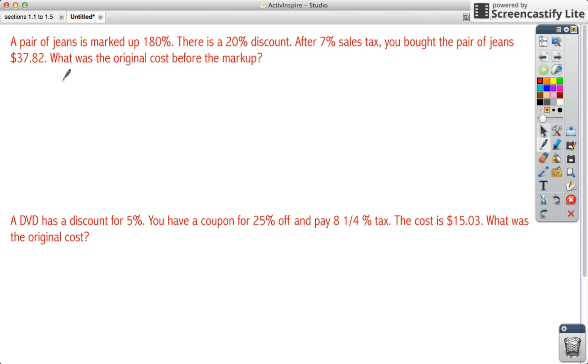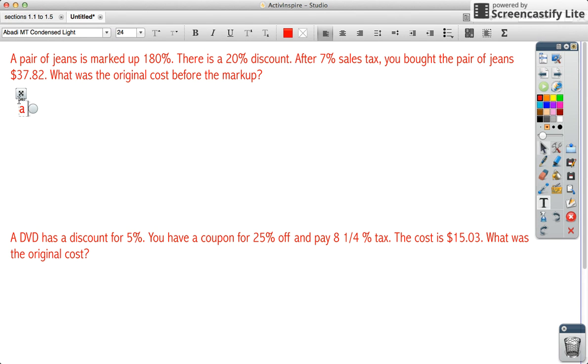If we look at the first problem, a pair of jeans is marked up 180%. There is a 20% discount, and after 7% sales tax, you bought the pair of jeans for $37.82. What was the original cost before markup? So I am going to start by using part equals percent multiplied by whole. There are many different ways you can do this, and that is completely fine, whatever you choose. But you need to make sure you're able to use an equation or proportion or something where I can see your ability to use variables in solving for a percent. Here's our equation.